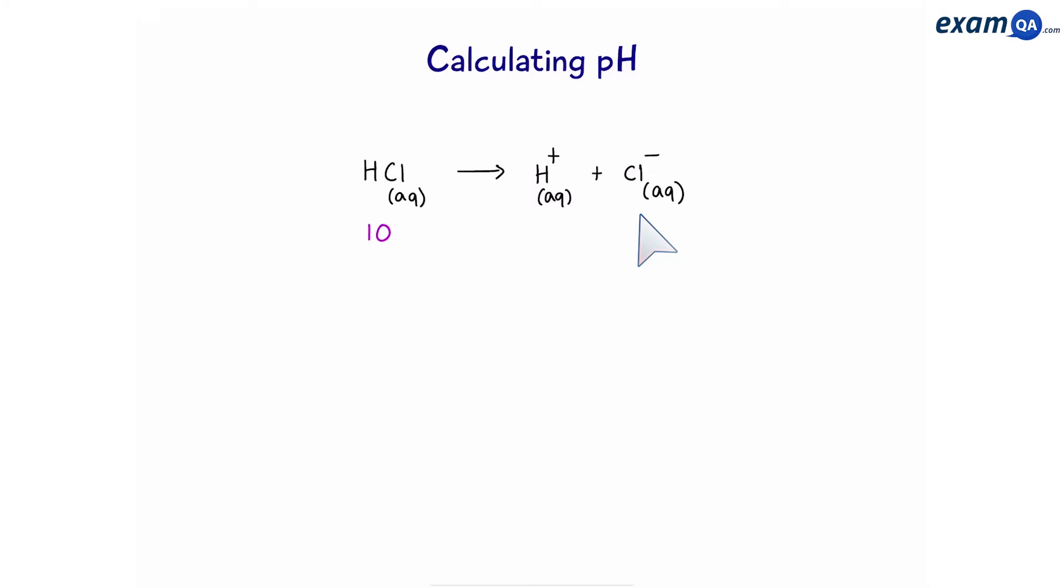So let's say we have 10 molecules of hydrochloric acid. Of course, in the beginning, we're not going to have any hydrogen or chloride ions yet because it hasn't broken down. So we leave it for a while, come back, and the hydrochloric acid has fully broken down.